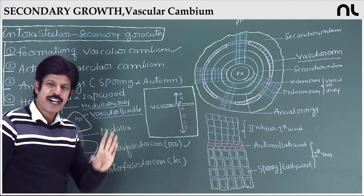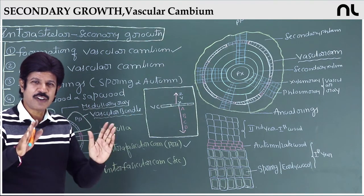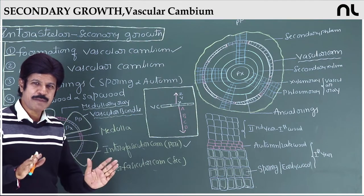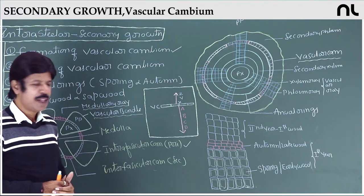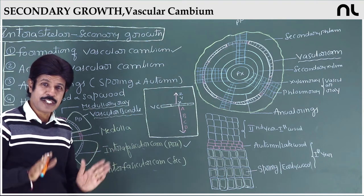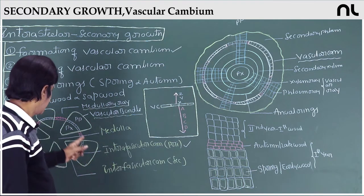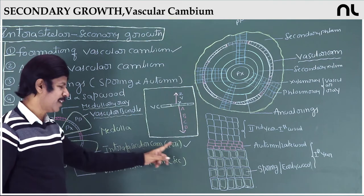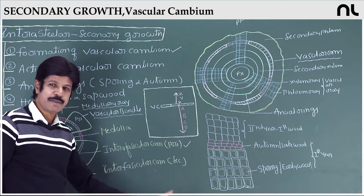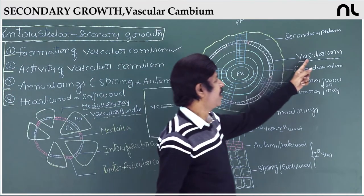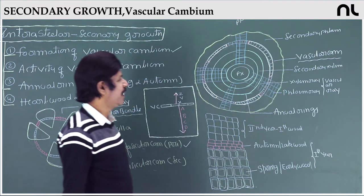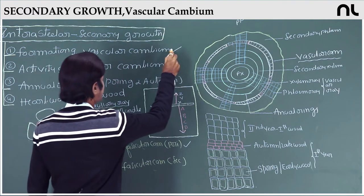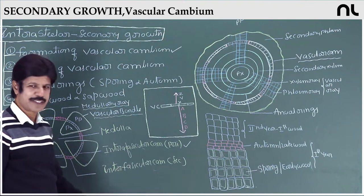The vascular bundles in a dicot stem are collateral, conjoint, and open, arranged in a concentric circle — a eustele. The cambium between primary xylem and primary phloem is called intrafascicular cambium, which is primary. The medullary ray parenchyma undergoes de-differentiation and forms strips of cambia called interfascicular cambium, which is entirely secondary. Together they form the vascular cambium, which is partly primary and partly secondary. Formation of vascular cambium is first initiated with the formation of interfascicular cambium.